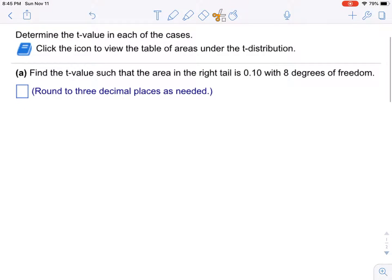Alright, what are we supposed to do? Let's determine the t-value in each of the cases. We can click the icon to view the table of areas, but we're not going to use that because we're using the calculator to solve this problem. It's saying find the t-value such that the area in the right